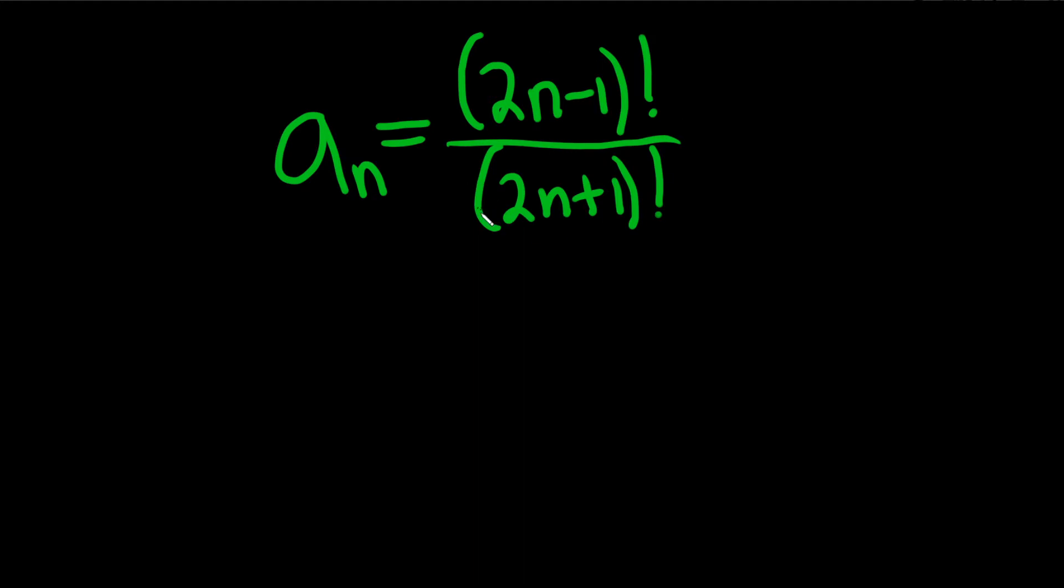So let's start by simplifying these factorials. That's actually the hardest part of the problem. So see 2n minus 1 factorial over 2n plus 1 factorial. So let's leave the top part the same. So 2n minus 1 factorial. And on the bottom, let's just use the definition of factorial.